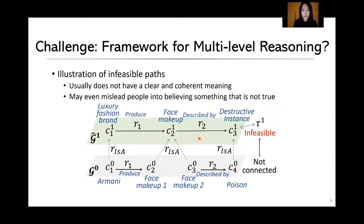Such invisible paths may mislead people into believing something that is not true. For example, a high-level path may say that a luxury fashion brand produces face makeup described by a negative term, making people feel the brand is bad. However, these high-level paths can be extracted only because at the bottom level, Armani produces a face makeup and another unrelated face makeup produced by some other brand is described by that negative term. So the luxury fashion brands never produce any face makeup described by that term — it is quite misleading.